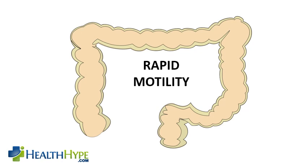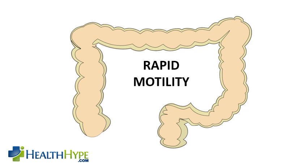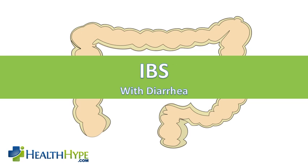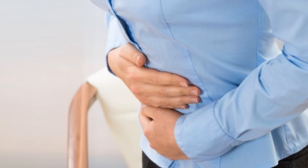Lastly, diarrhea may occur when movement through the bowels becomes faster than normal. These movements are caused by the coordinated contraction and relaxation of the bowel muscles, but sometimes these movements can be abnormally quick and there is not enough time for normal digestion and water reabsorption to occur. This may be seen in conditions like irritable bowel syndrome with diarrhea.